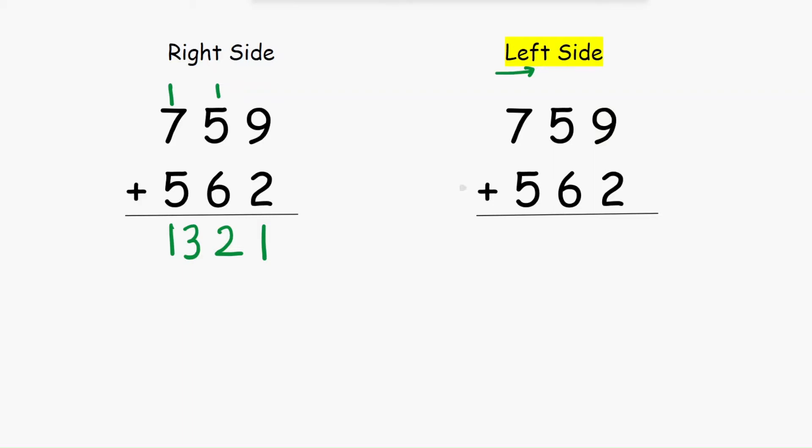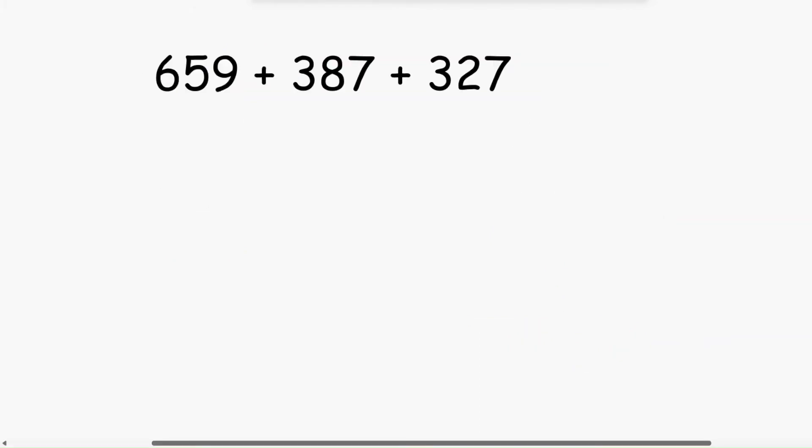So how are we going to do it? 7 plus 5 equals 12, 5 plus 6 equals 11, 9 plus 2 equals 11. Add all these numbers: 1, 2, 3, 1. We are getting the answer in five seconds. Let's add these three numbers.